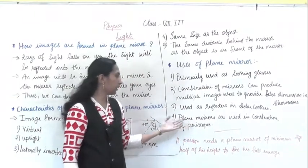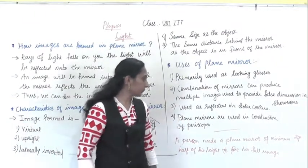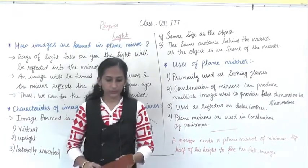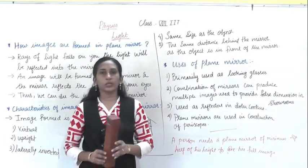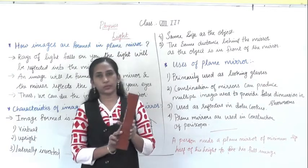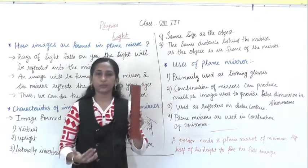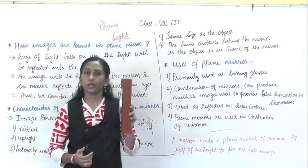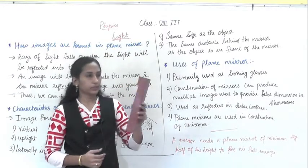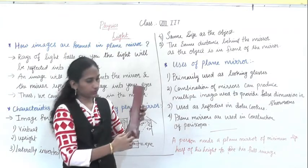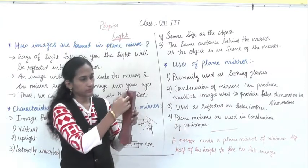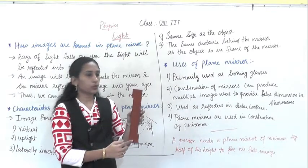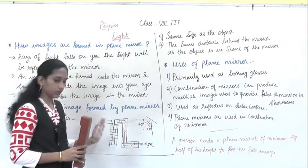The fourth use is that plane mirrors are used in the construction of a periscope. This instrument is called a periscope. It is used to see objects when you are in a hidden place. Inside the periscope there is one mirror fitted at the top and another mirror fitted below. I have drawn an image of that.